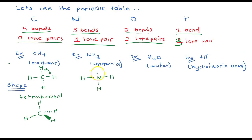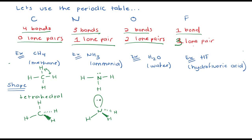If we draw the structure of ammonia, we have three bonds and a lone pair — four different things attached to nitrogen. We might think it would be tetrahedral, but it has a slightly different shape. The lone pair takes up a little more room than a bond, so the shape is slightly different. We call this trigonal pyramidal.